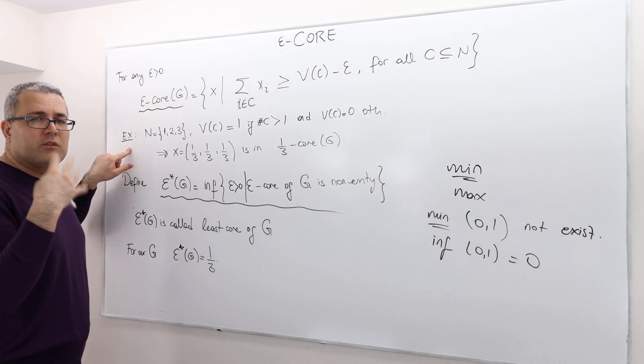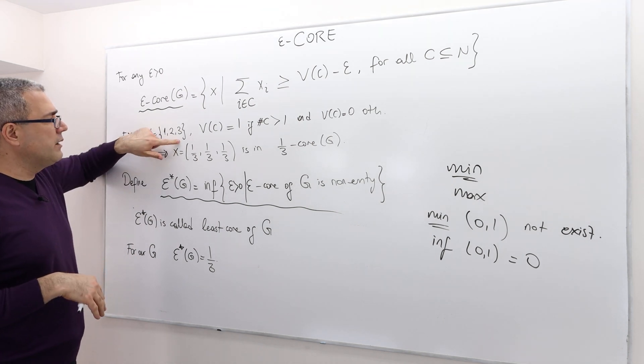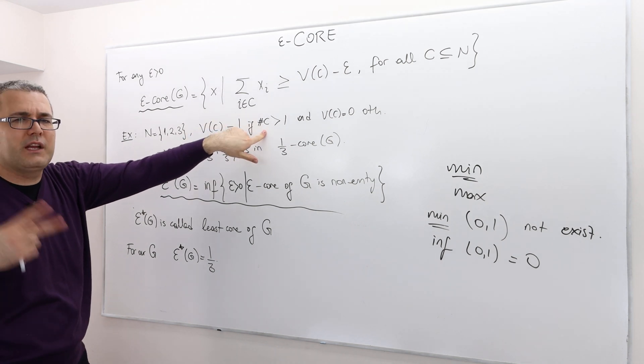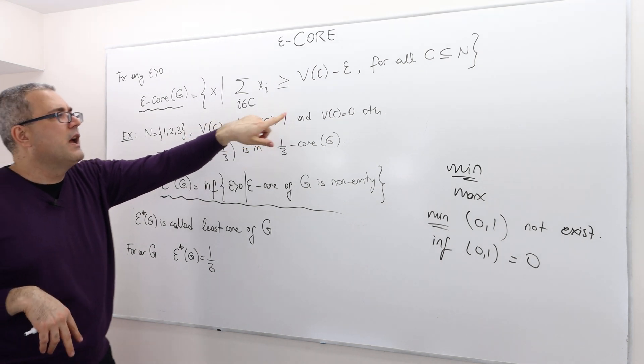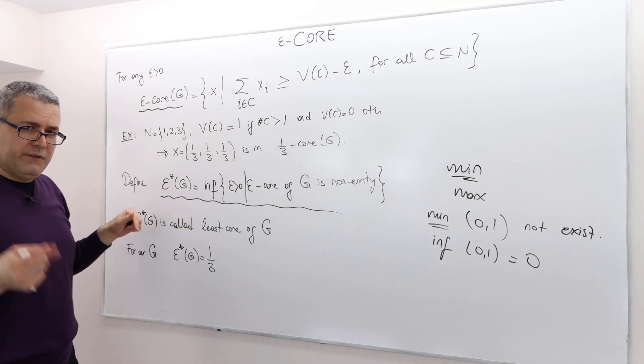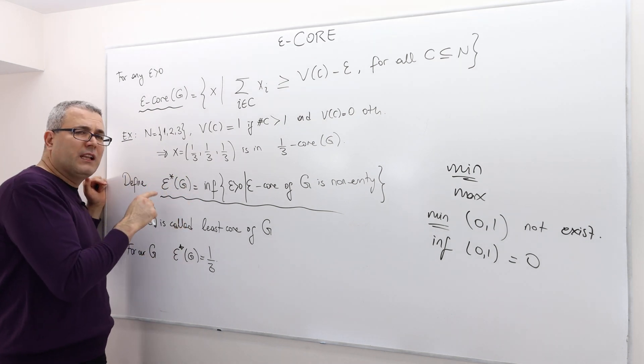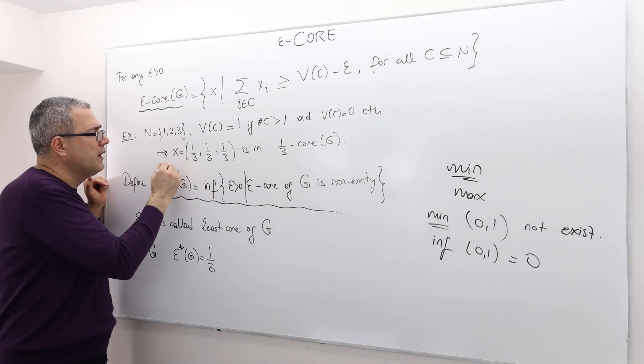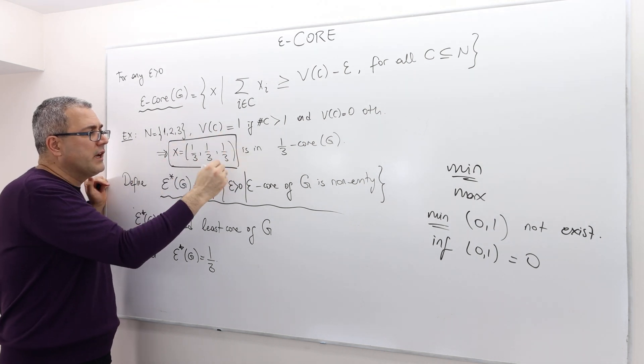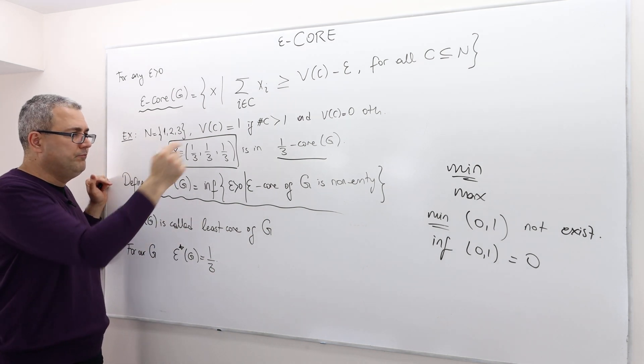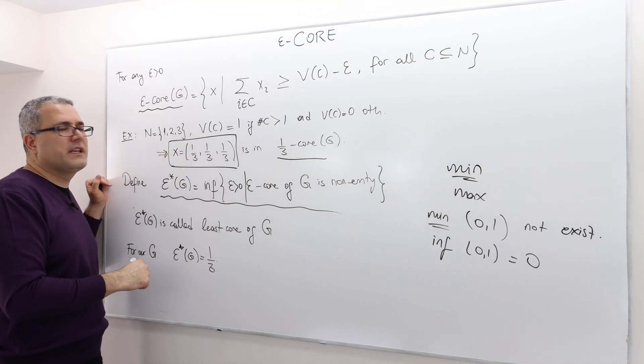If we go back to our example, where there are three players and the worth of each coalition is one if the coalition has two or more members and zero otherwise. If you remember, we said there is going to be no stable allocation in this game. However, this payoff vector is, for example, one-third epsilon core of this game G.